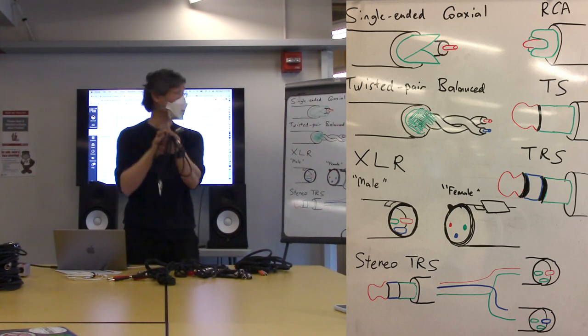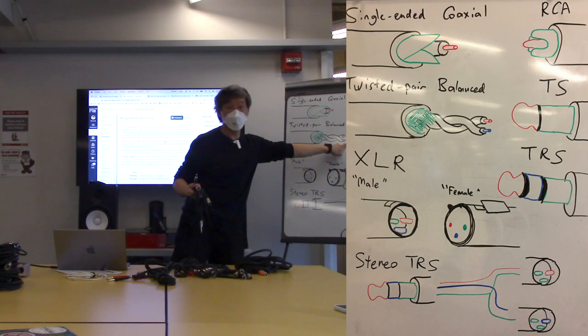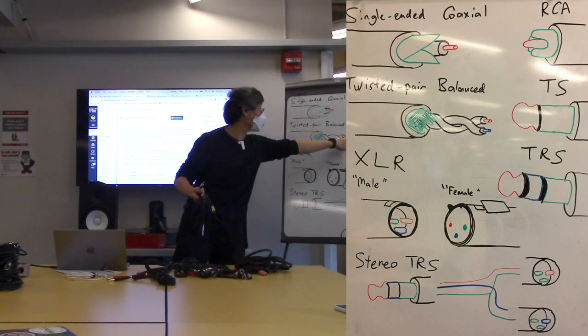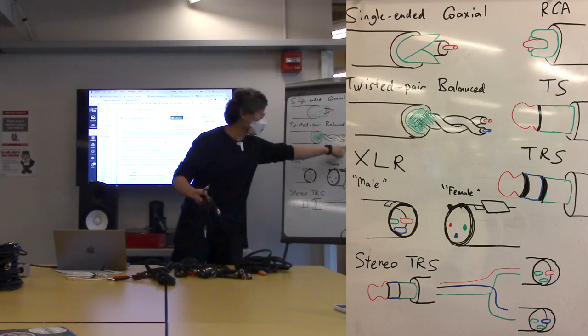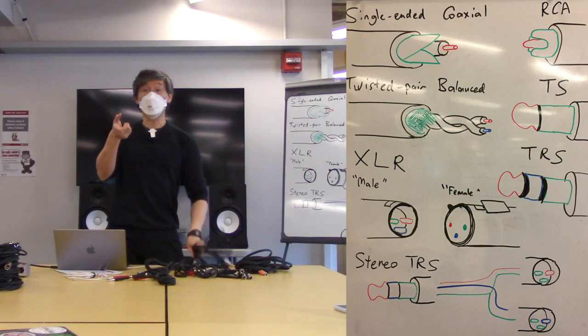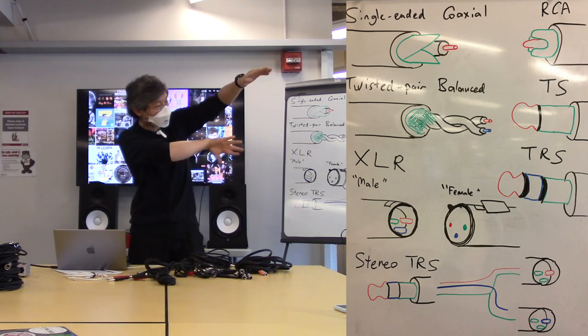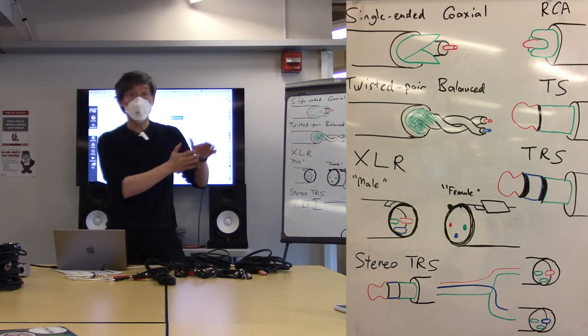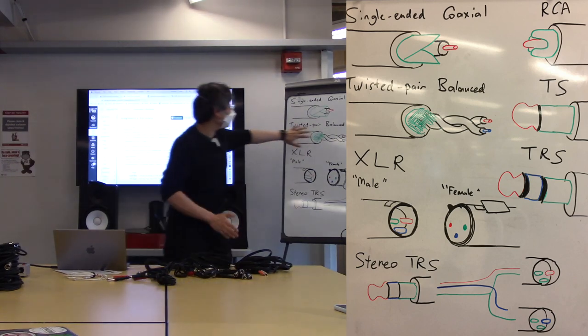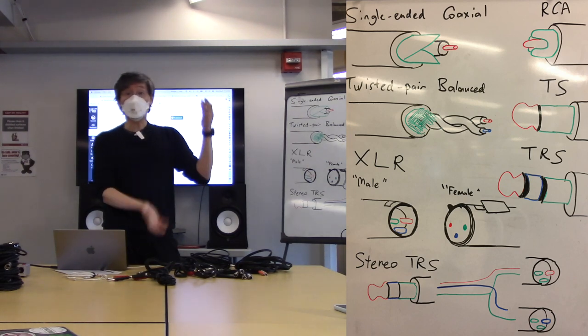When you plug it into a device like these speakers that actually has a tip ring sleeve connector, they will invert the signal again and add them up to each other. Any noise that's being carried on these two will also get inverted again and added to each other. And as a result, cancel each other out.